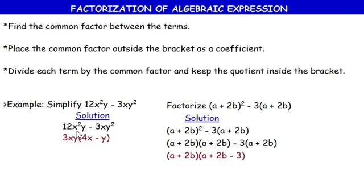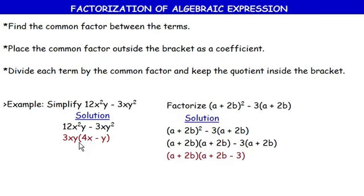For the variable aspect: x goes into x² x times. Y goes into y one time, and since it's 1, we don't write it. So 3xy goes into 12x²y four-x times. When we multiply 3xy by 4x we get 12x²y — 3×4=12, x×x=x², and y×1=y.